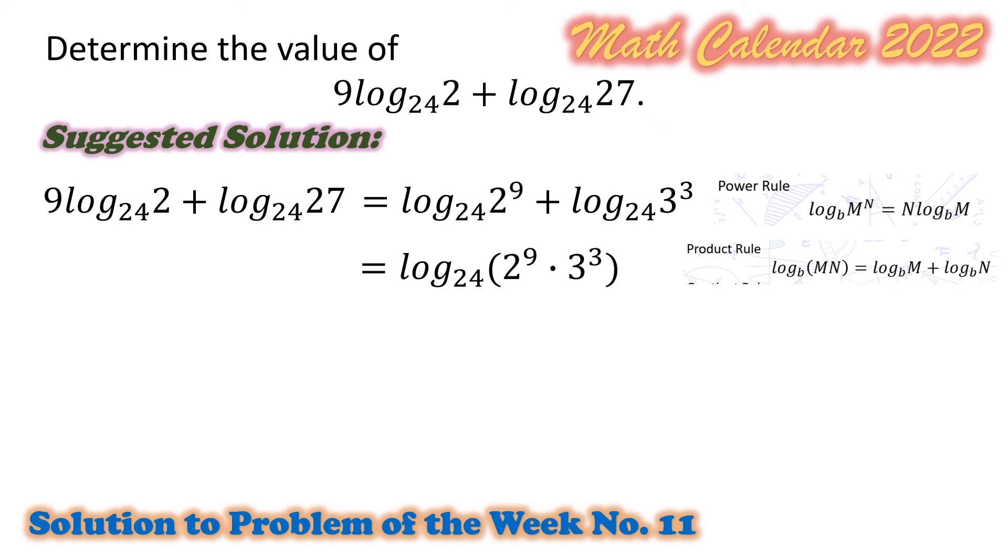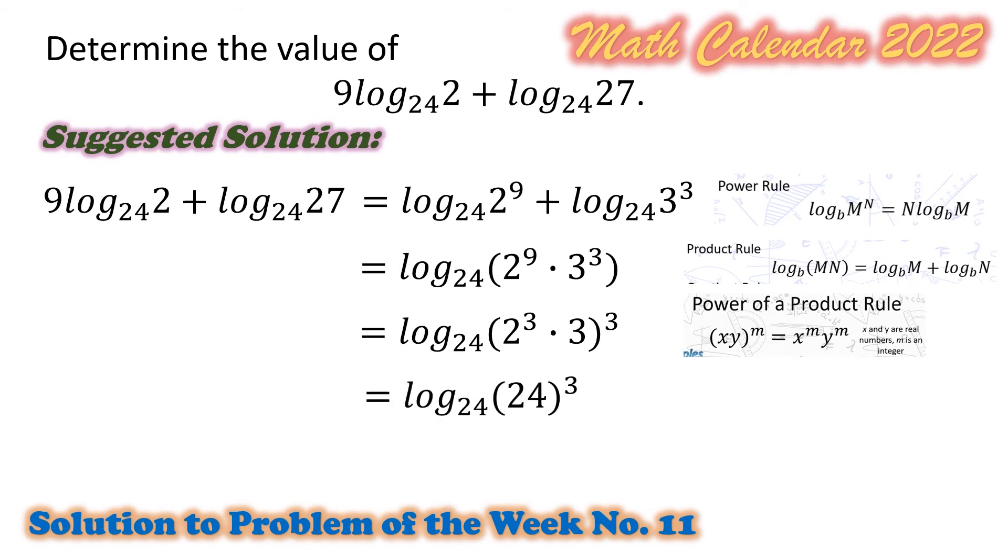2 raised to 9 times 3 cubed may be expressed as 2 cubed times 3 raised to the 3rd power. And in here, we use the power of a product rule in rules of exponents. 2 cubed times 3 is equal to 24, so we have logarithm of 24 cubed to the base 24.